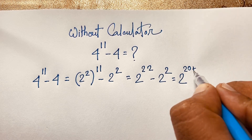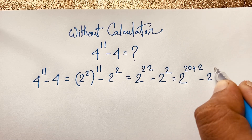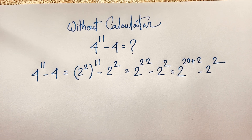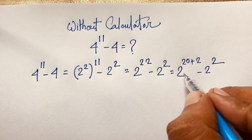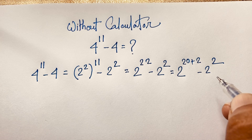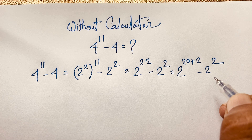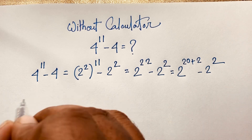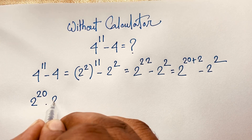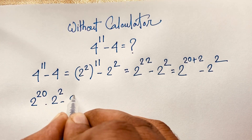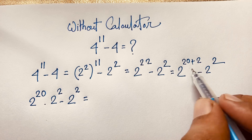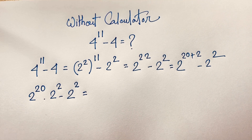I can write 2 to the power 22 as 2 to the power 20 plus 2. According to the exponential law, a to the power n plus m equals a to the power n times a to the power m. Using this law, I can write this expression as 2 to the power 20 times 2 to the power 2, minus 2 to the power 2.